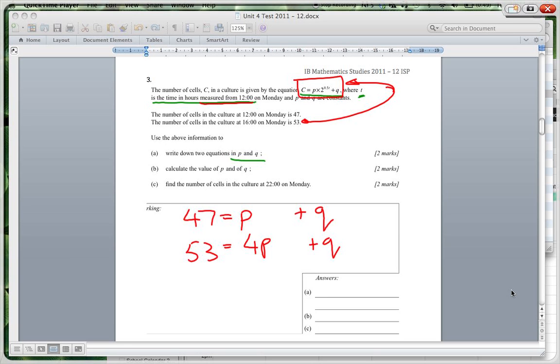You can do simultaneous equations. There's two different ways of doing this. There's your way where you can substitute or you can subtract. Probably the subtracting is easier. If I just subtract from this equation, I subtract this one. So if I take this whole one and I subtract it, I'm going to get 47 minus 53, which is minus 6, equals P minus 4P, which is minus 3P. And the Q minus Q is 0. So P is going to be minus 6 divided by minus 3, which is 2.